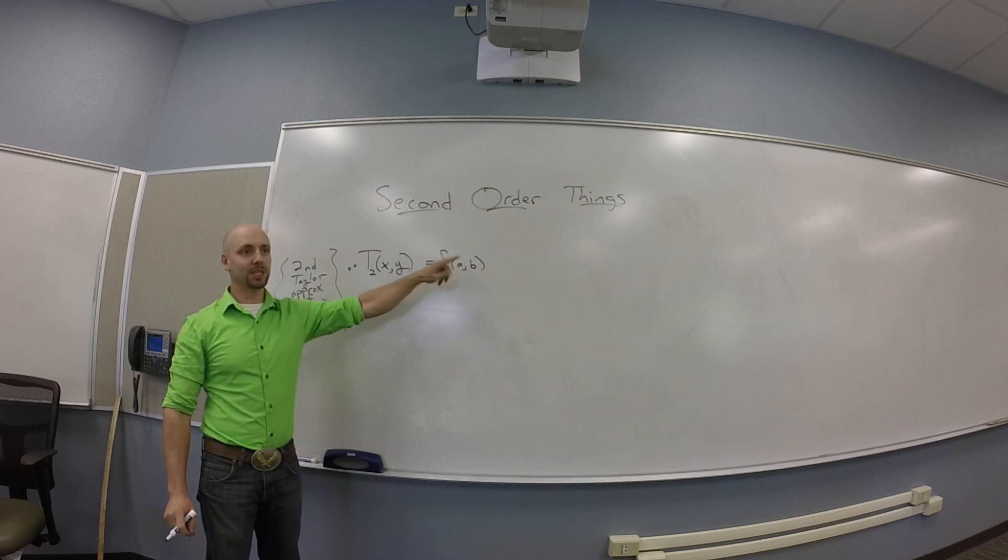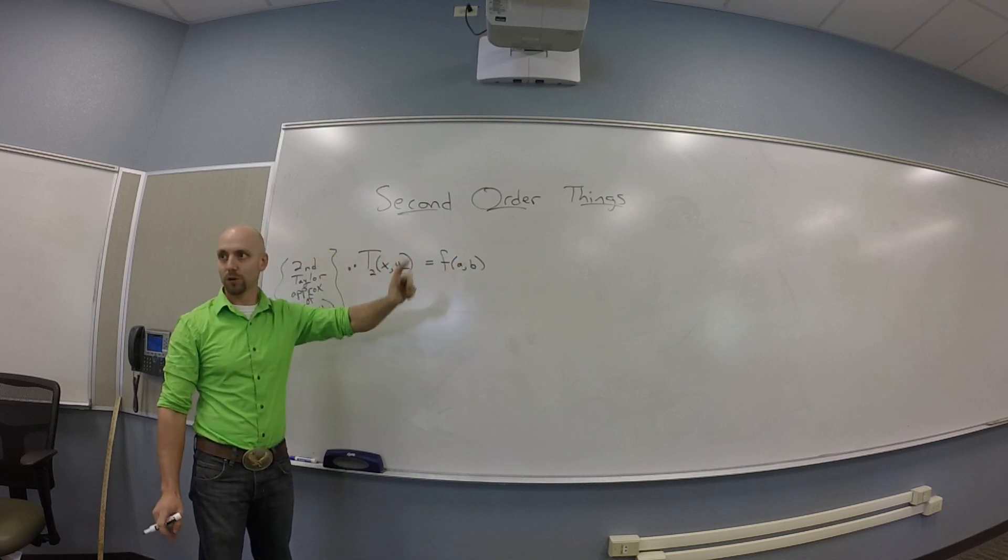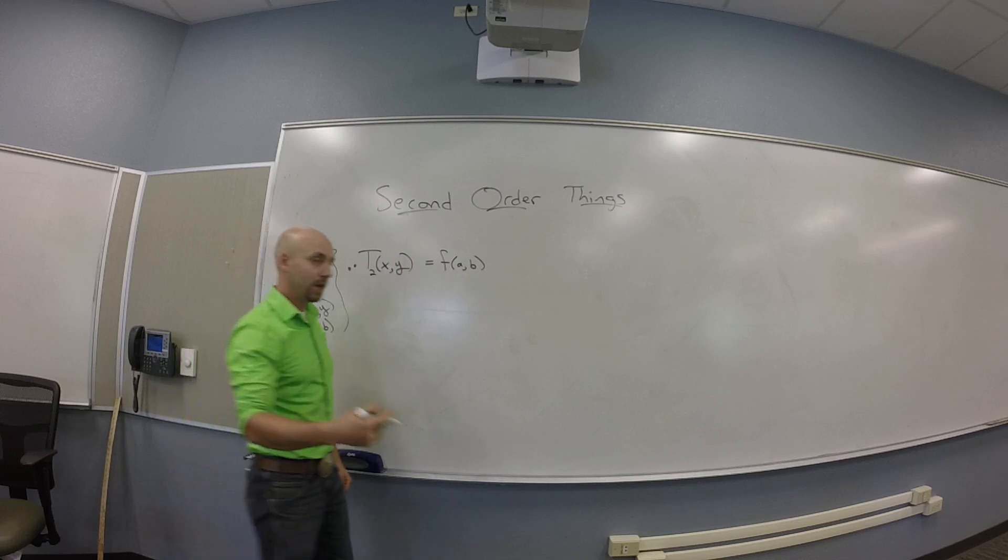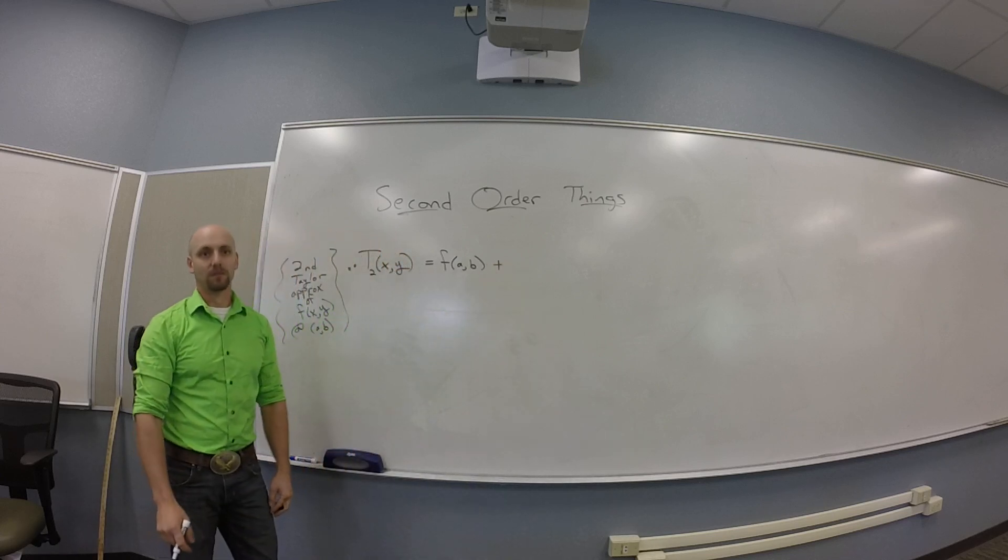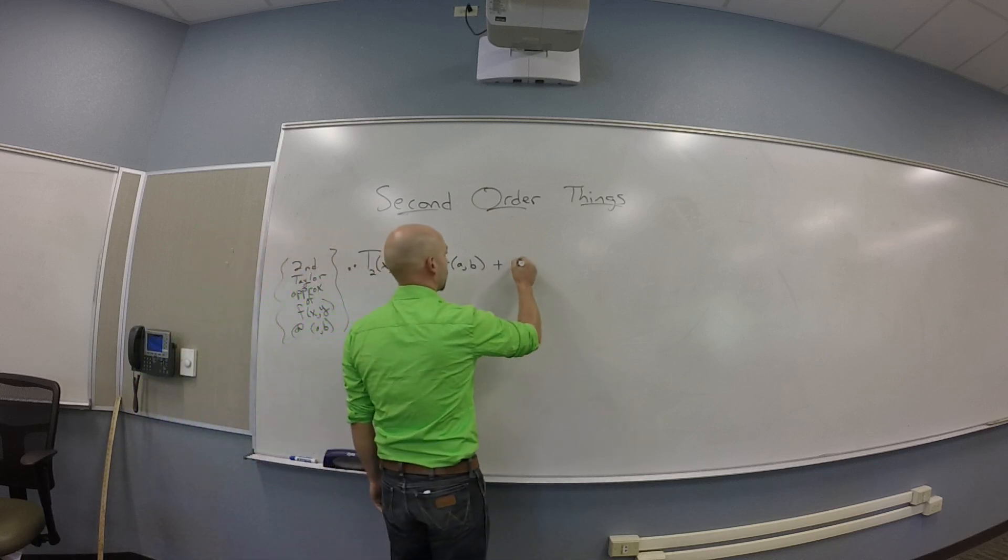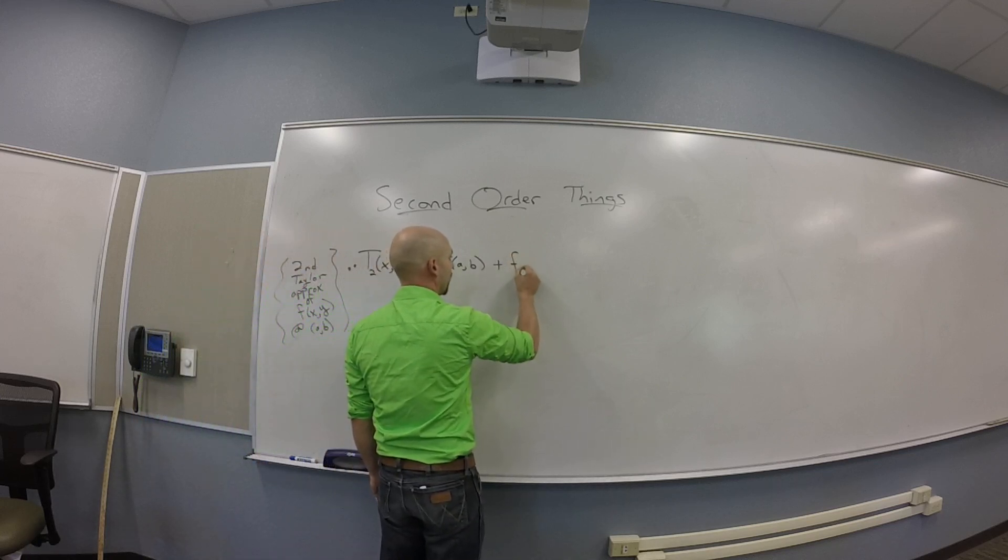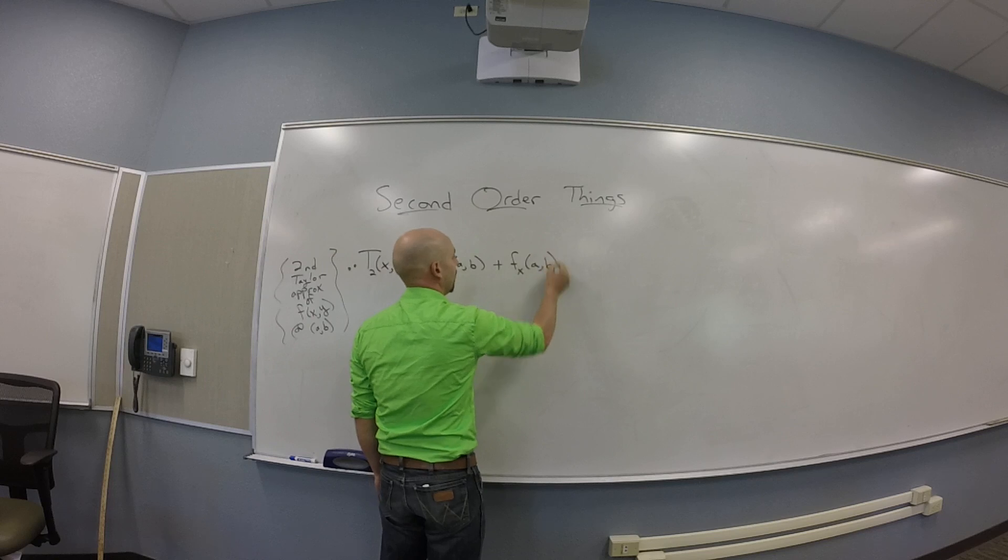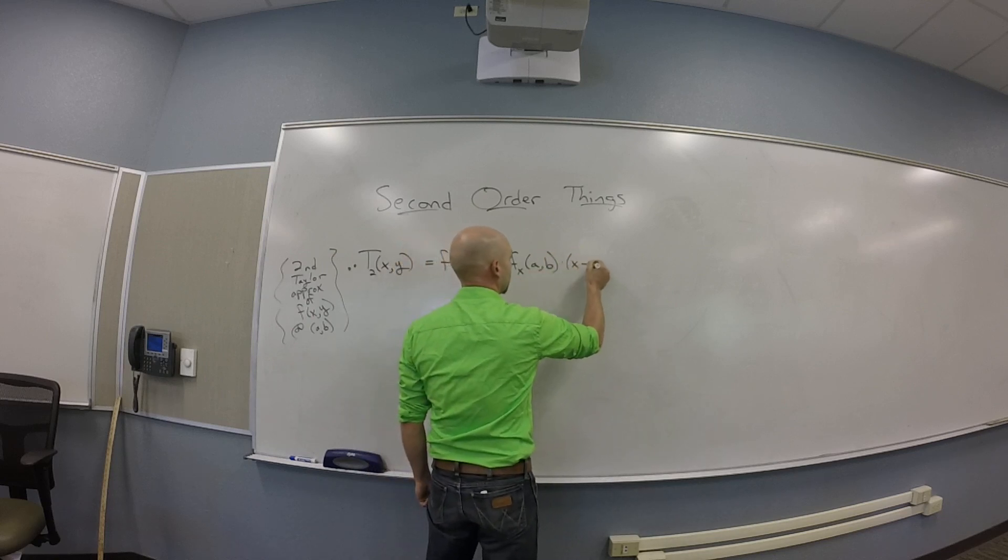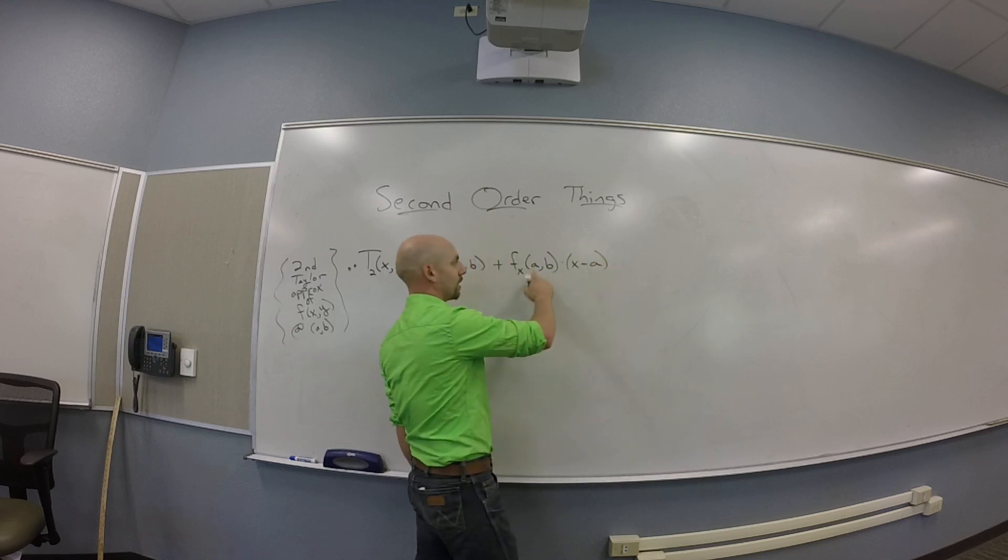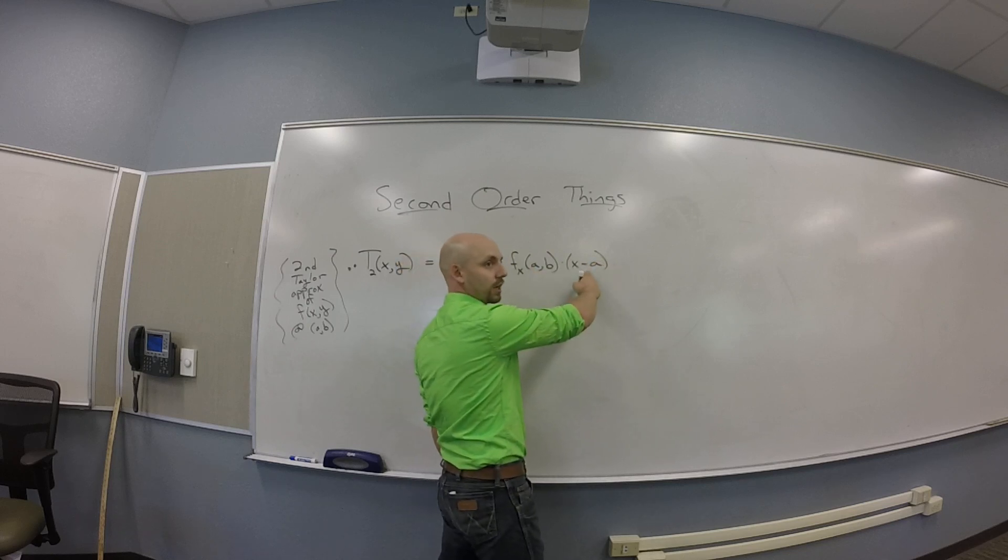So zeroth order - the dumbest guess you can have is you just evaluate the function at the point. Then the next dumbest thing you can do is add FX at AB times X minus A. So really I'm thinking the X slope times the change in X.